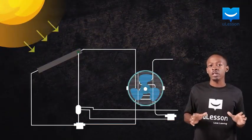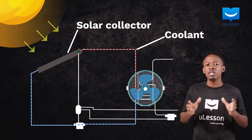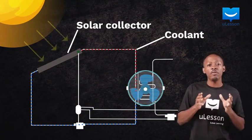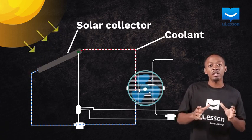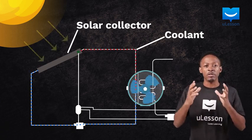Alternatively, solar collectors may be useful for heating air. Instead of a fluid being used in the heat exchanger, there is a fan which directs the heated air around the building.